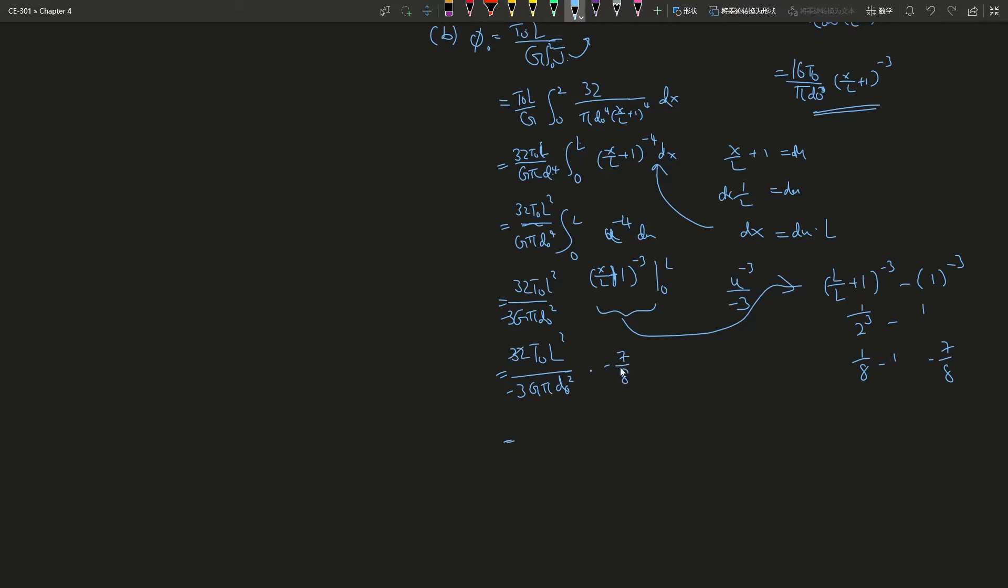Okay, so we're gonna calculate this here. So L over L plus 1 to the negative 3 minus 1 to the power of negative 3. So what is this? This is 2 to the power of negative 3, which is 1 over 8, minus 1. That is negative 7 over 8. So this is 32 times T0 times L square over negative 3 g pi d0 to the power of 4. The negative cancels out. This divided by 4 equals 8, this divided by 4 is 2. So 4 times 7 is 28 over 3 times g pi d0 squared. And that is how you do this problem. Yeah, this should be the final expression for this question.